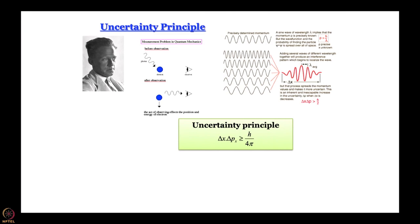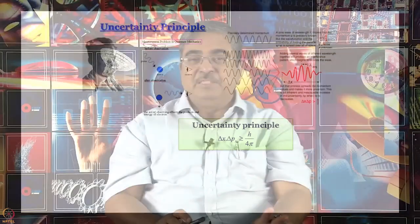We will come back to this issue a little later. For now, let us just take it axiomatically that the uncertainty principle is something one cannot violate, and Bohr's theory tries to do precisely that — it tries to determine position and momentum together, which cannot be done.